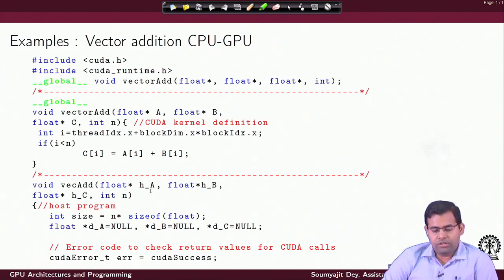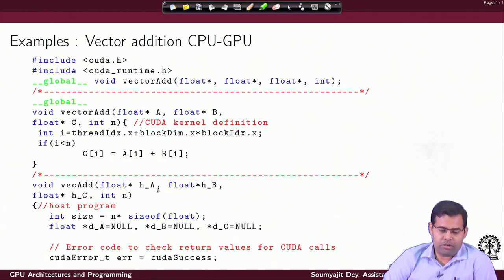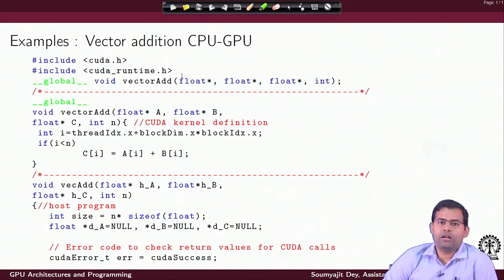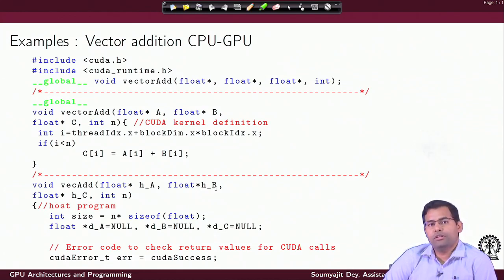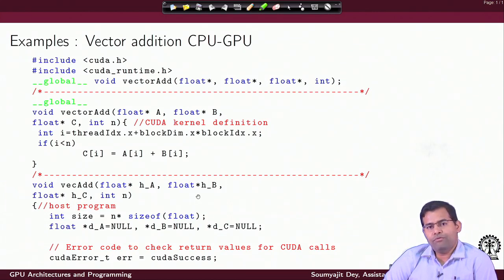Now here comes the first CUDA program for a CPU-GPU system. First, observe the hash includes: we have cuda.h and also cuda_runtime.h. These are the header files containing the required CUDA functionalities used in our code. In this first CUDA program, there will be a piece of code that executes on the CPU and it will launch the parallel device code for the GPU — this is what we call the kernel.